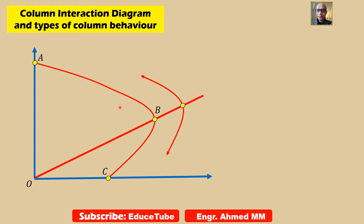The axial load resistance I am showing on the vertical axis, whereas the moment resistance I am showing on the horizontal axis. The region of this column interaction diagram is associated with different types of column behavior.